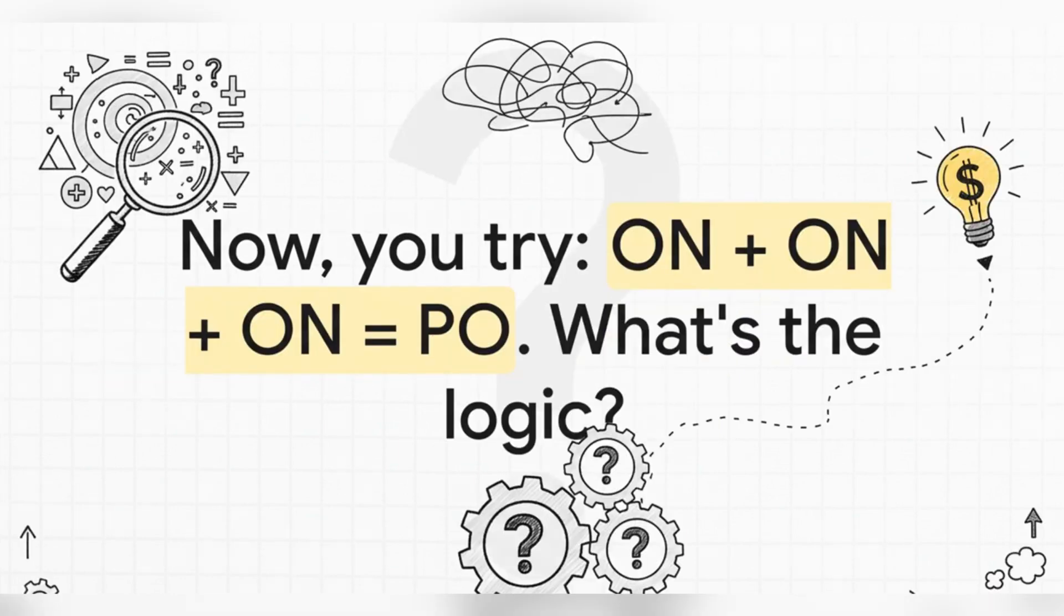And that really brings us to the final point. The real fun in math isn't just knowing the tricks. It's getting that aha moment when you finally understand why they work. So, I'm going to leave you with one to try on your own: ON + ON + ON = PO. Using the same kind of detective work we just did, what's the hidden logic here? What numbers are hiding behind those letters?